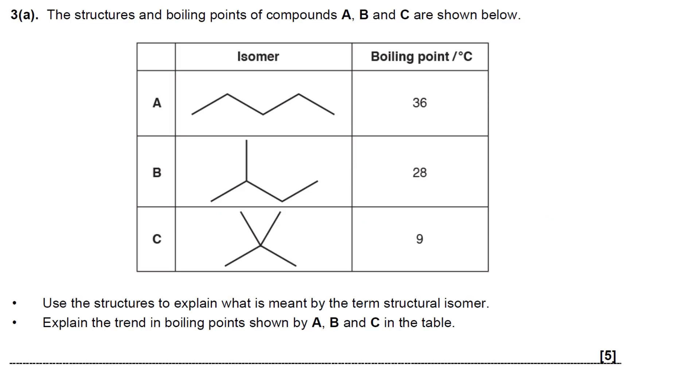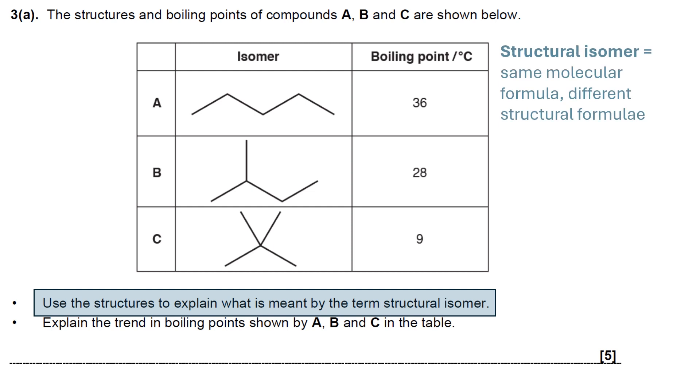So it gives you three compounds A, B and C. You can clearly see there's different skeletal formulae and it says use the structures to explain what is meant by the term structural isomer.